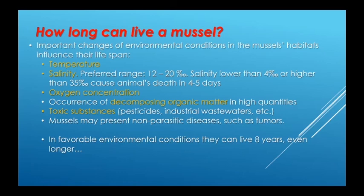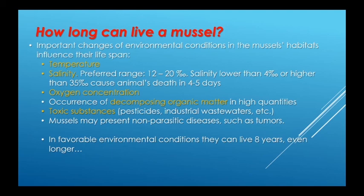As a closing question: how long can a mussel live? Important changes of environmental conditions in the mussel's habitats influence their lifespan. Temperature is very important. Mussels prefer a salinity range between 12 and 20; salinity lower than 4 or higher than 35 causes death within 4 to 5 days. Oxygen concentration is also important, as is the occurrence of decomposing organic matter in high quantities and toxic substances such as pesticides and industrial wastewaters. Mussels may present non-parasitic diseases such as tumours. But in favourable environmental conditions, they can live about 8 years or even longer.